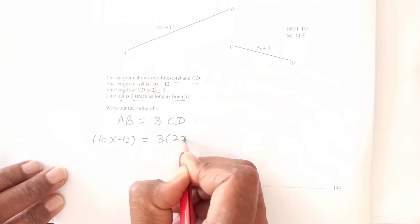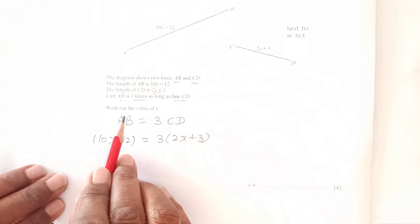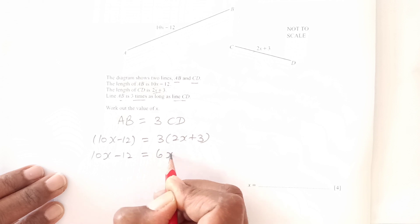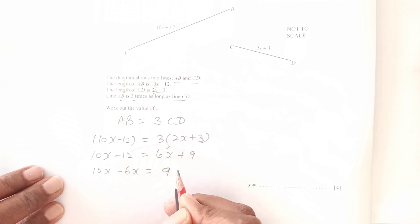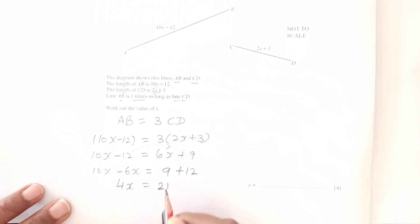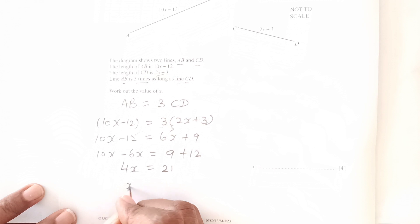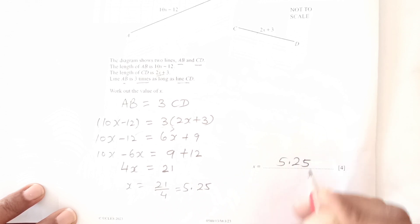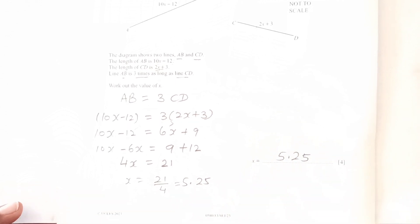10x minus 12 equals 3(2x + 3), which is 6x plus 9. So 10x minus 6x equals 21, giving 4x equals 21. Therefore x equals 21/4, which is 5.25.